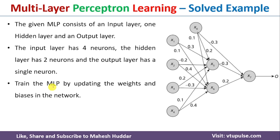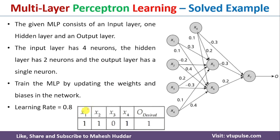We need to train the multi-layer perceptron by updating the weights as well as the biases in the network. The learning rate given to us is 0.8. The inputs x1, x2, x3, x4 are 1, 1, 0, 1 respectively. The desired output — the target output — is 1, which is what is expected from this particular multi-layer perceptron network.